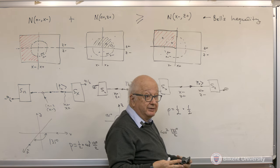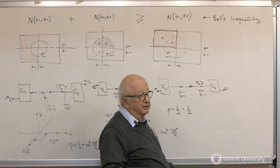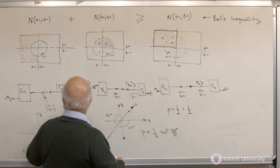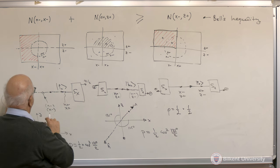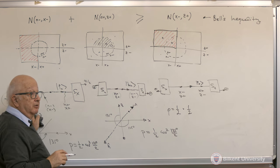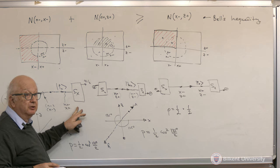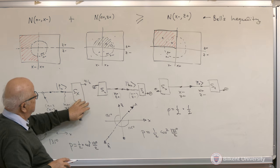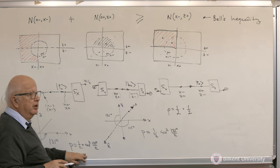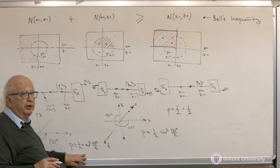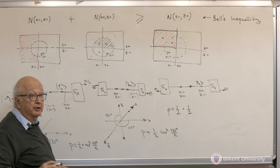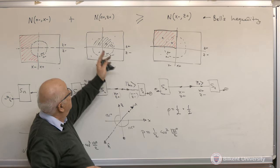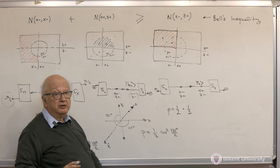If you make this measurement on the left-hand side, then the probability of getting that on the right-hand side is that. Nothing to do with Venn diagrams. That's that probability, that's that probability, and when you add them up it's less than that. A student asks whether we can associate some kind of negative probability. No — if you start associating negative or complex probabilities, then it's a good sign that you are not on the correct path.